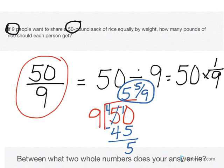Between what two whole numbers does your answer lie? Well, 5 and 5 ninths is more than 5 but less than 6, because we have 5 pounds and a little bit more but we don't quite have 6. So 5 and 5 ninths is between 5 and 6.